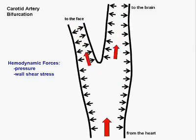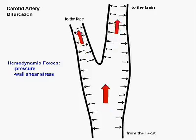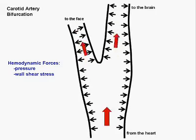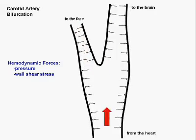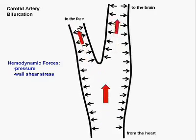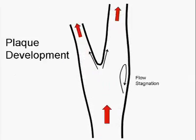At the same time, the blood creates friction against the wall, pushing gently on the wall with a shearing force. Shear forces can vary at different locations along the artery wall because of the artery's complex geometry.